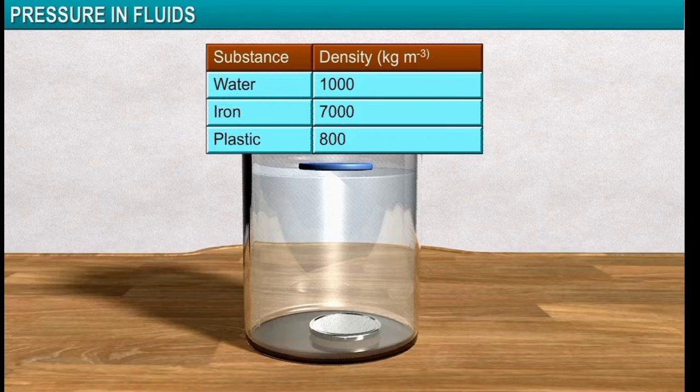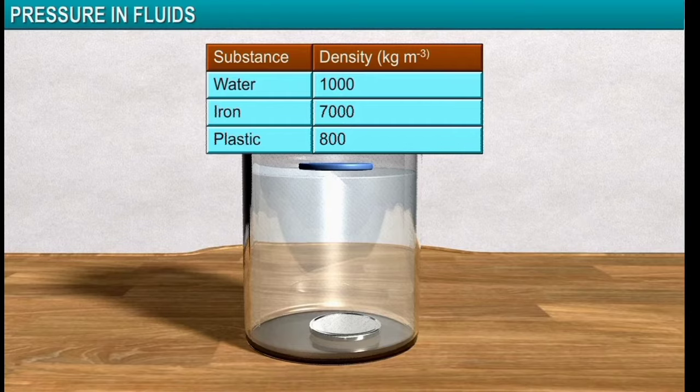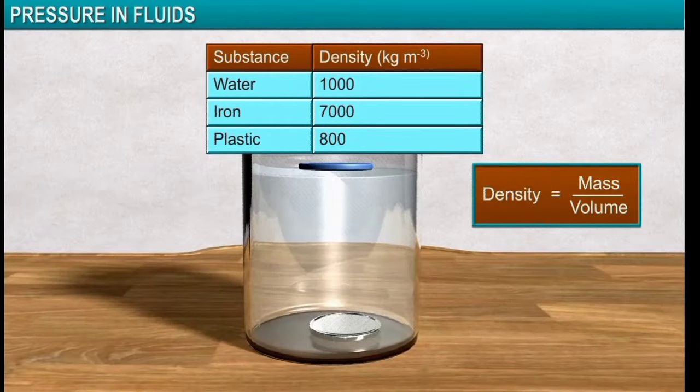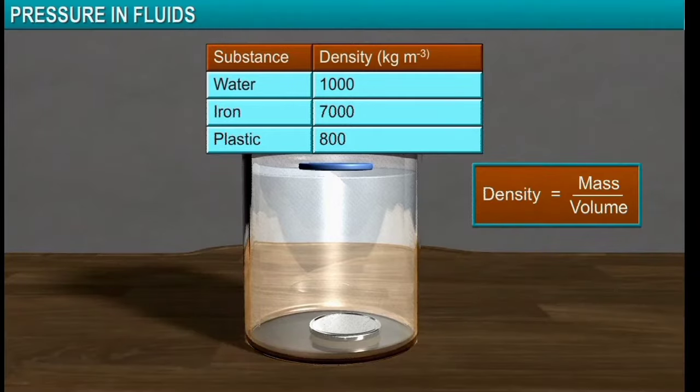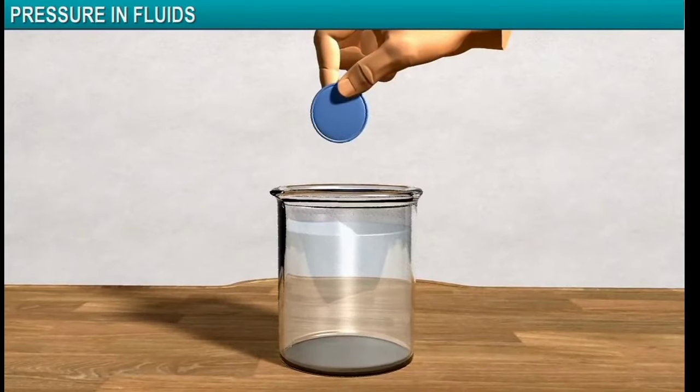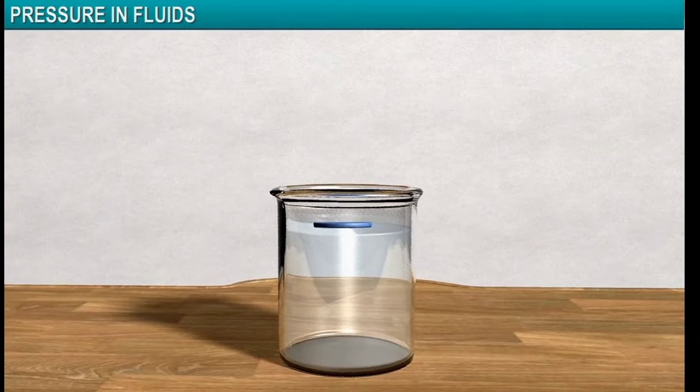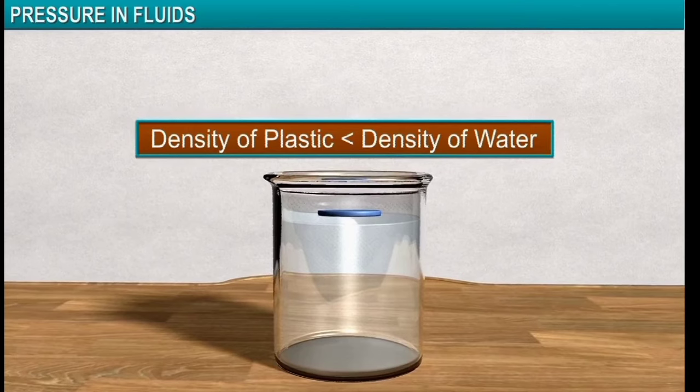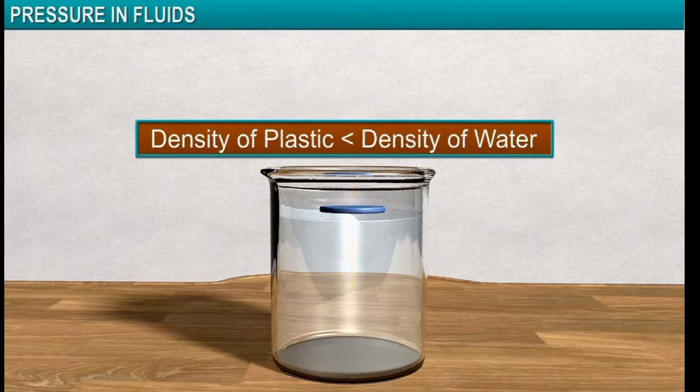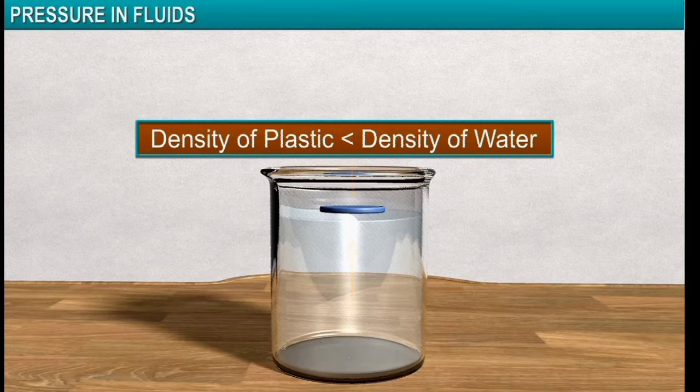Therefore, the floating and sinking of objects in water depends on how the density of the object compares with the density of water. The plastic coin floats in water because the density of the plastic coin is less than the density of water. Therefore, the upthrust of water on the plastic coin is greater than the net weight of the coin.